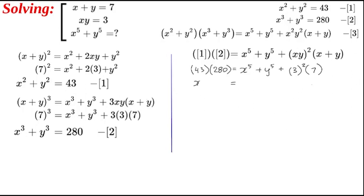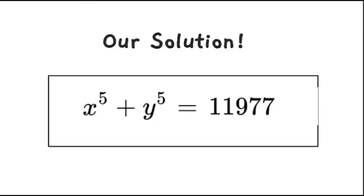Rearranging, we get x to the power of 5 plus y to the power of 5 is equal to 43 times 280 minus 9 times 7, which gives us a result of 11,977. So x to the power of 5 plus y to the power of 5 is equal to 11,977.